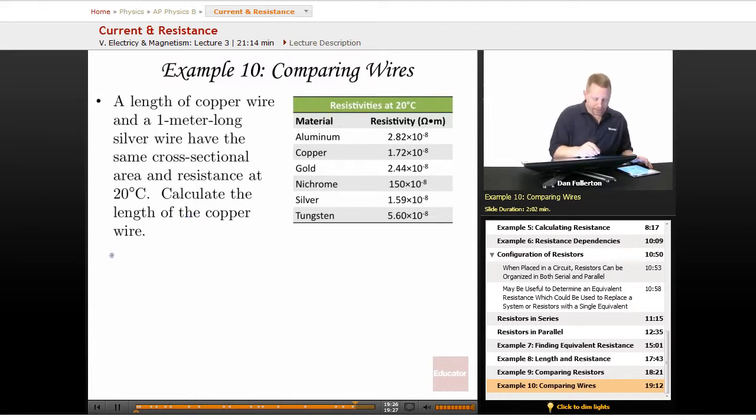Now to start off with, let's write our relationship R is going to be equal to rho L over A. And if that's all for copper, if they have the same resistance, that must equal rho L over A for silver.